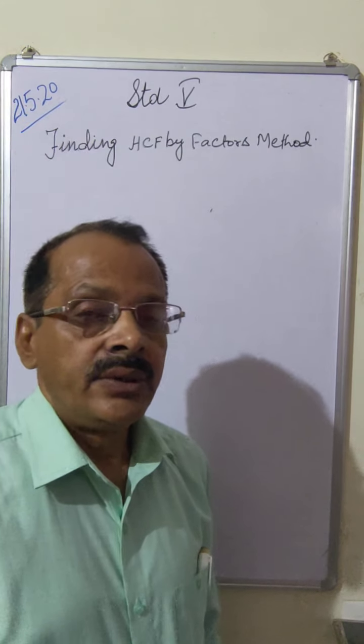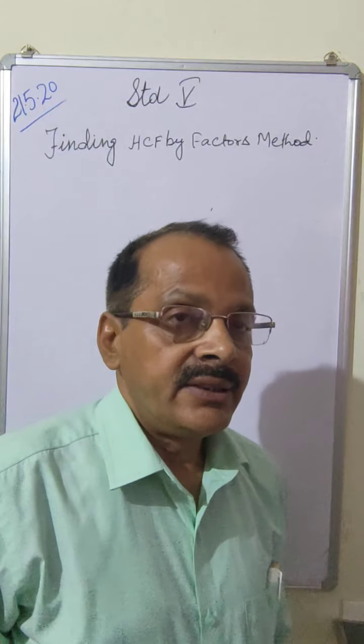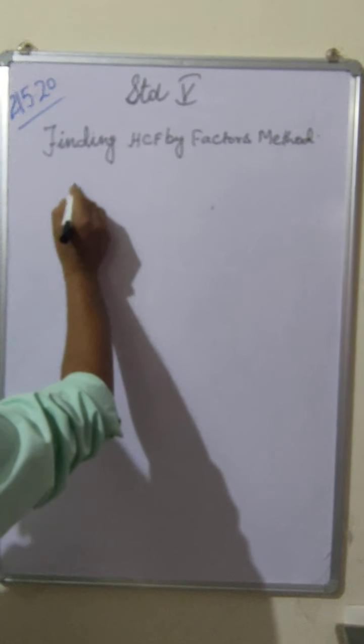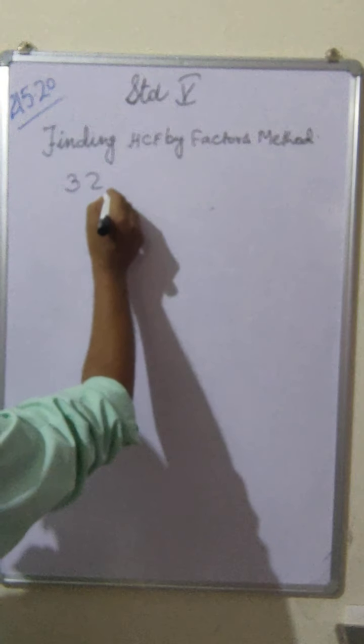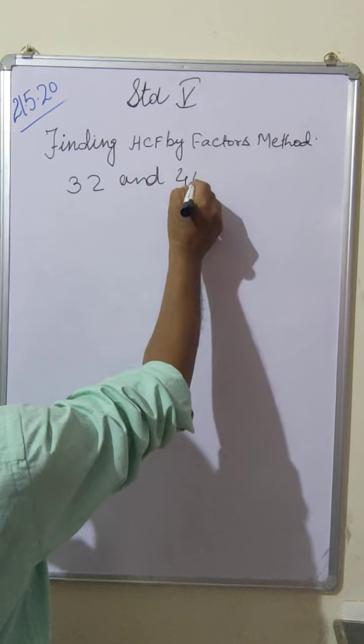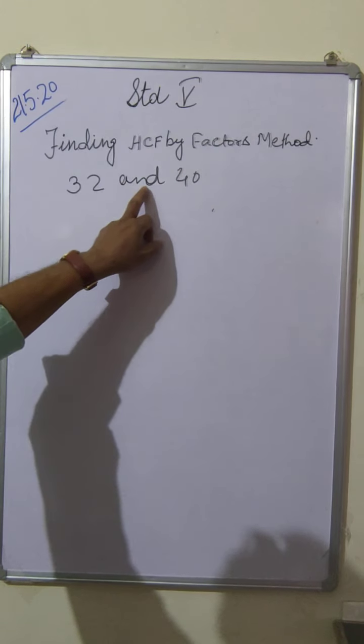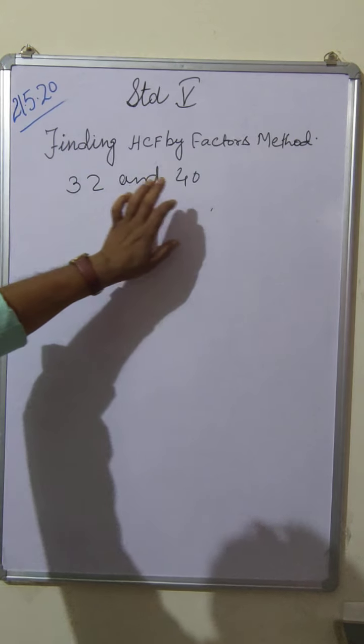Today I am going to teach you how to find HCF by factors method. So children, suppose you have two numbers 32 and 40 and you have to find the highest common factor of 32 and 40.